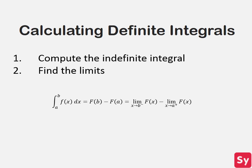This is also equal to the limit as x approaches b from the left of f of x, minus the limit as x approaches a from the right of f of x. We don't take into account the constant c because it cancels out.